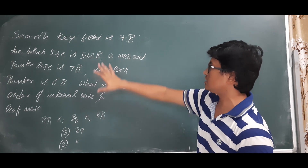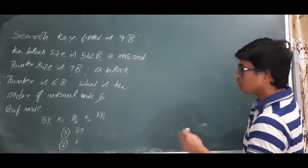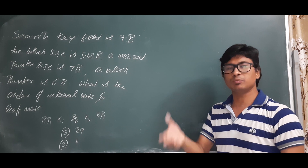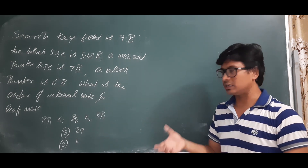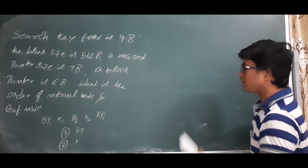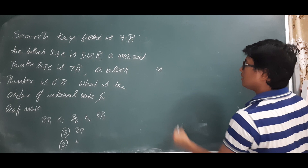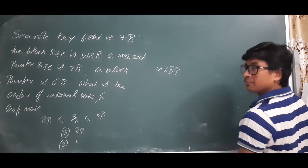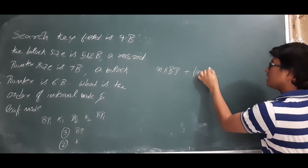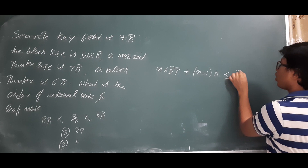With this structure we can find the order of the internal node. The order of the internal node is the maximum number of children an internal node can have, which equals the maximum number of block pointers. Let's say there are n block pointers; then there are n minus one keys. The total size must be less than or equal to the block size.